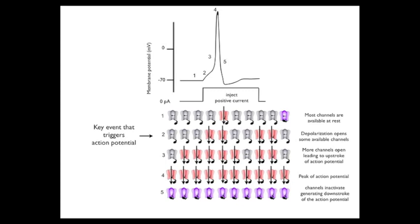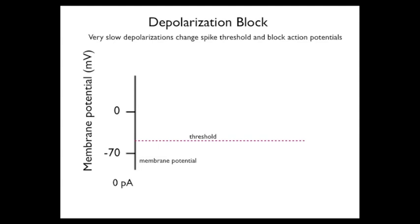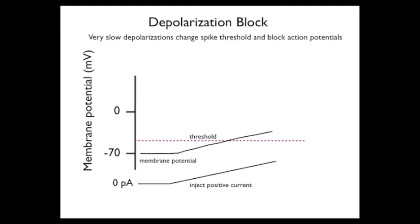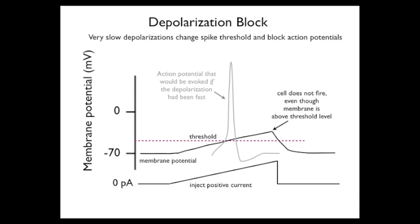Next, let's consider depolarization block — the condition where a strong depolarization that would normally trigger an action potential fails to evoke an action potential. Such blockage occurs when the membrane is very slowly depolarized, in contrast to the rapid depolarization shown previously. Positive current is injected into the cell, as shown by the lower trace, and the membrane potential also depolarizes as shown in the top trace. But the depolarization emerges slowly, and when it reaches a value that would normally trigger an action potential, it just continues to depolarize further without triggering the action potential.